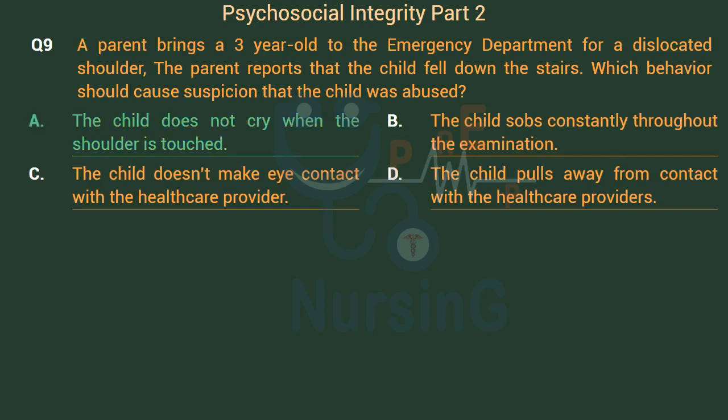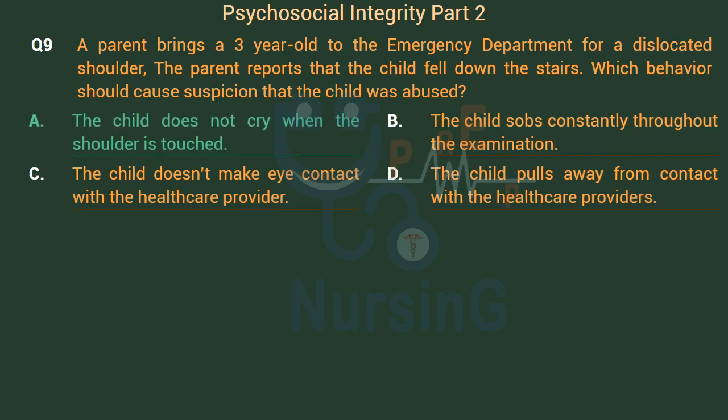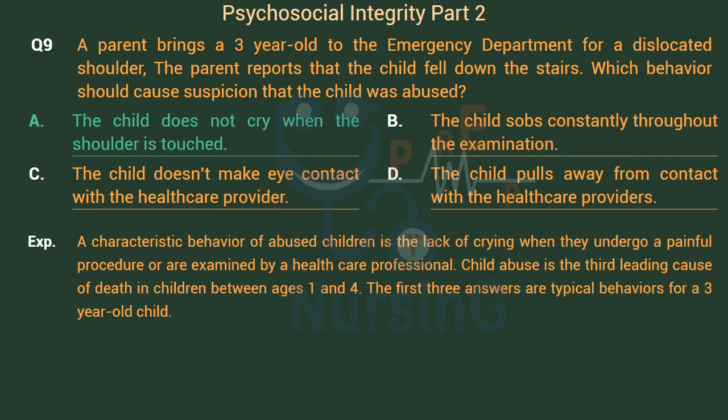The right answer is Option A: The child does not cry when the shoulder is touched. A characteristic behavior of abused children is the lack of crying when they undergo a painful procedure or are examined by a healthcare professional. Child abuse is the third leading cause of death in children between ages 1 and 4. The first three other answer choices are typical behaviors for a 3-year-old child.